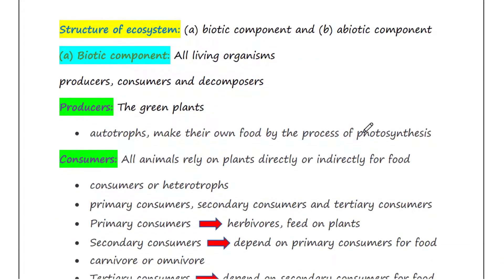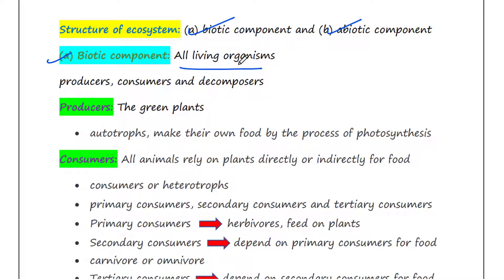Let's talk about the structure of ecosystem. The components or structure of ecosystem are of two types: biotic component and abiotic component. All living organisms of an ecosystem make up the biotic component. Biotic components are mainly of three types: producers, consumers, and decomposers, based on nutrition.